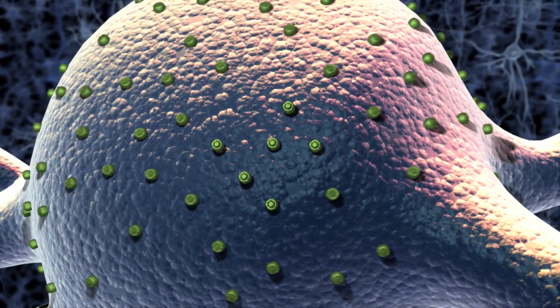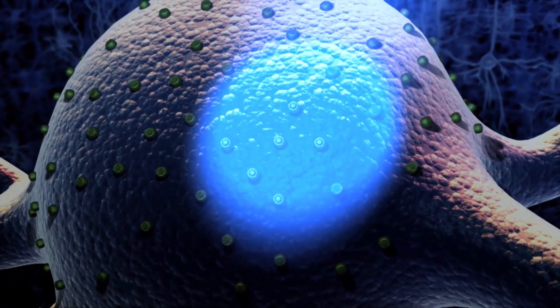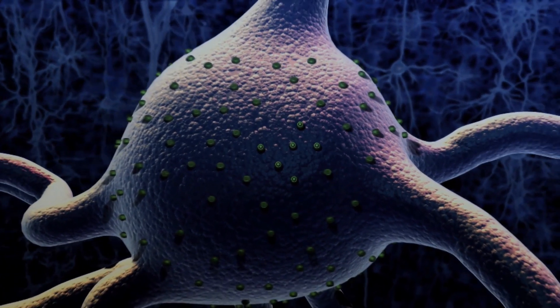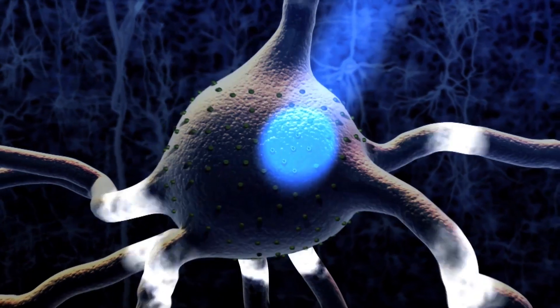Now when light hits that neuron, the channelrhodopsin proteins will convert the light into electricity, the neuron will fire an electrical pulse, and that will allow us to drive neural activity using light.